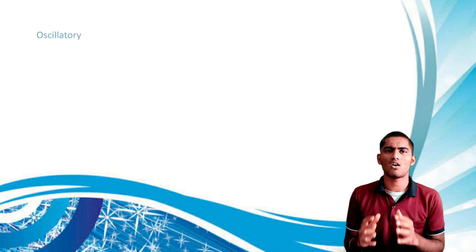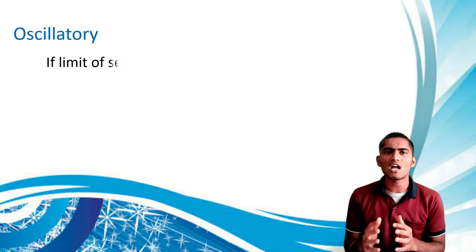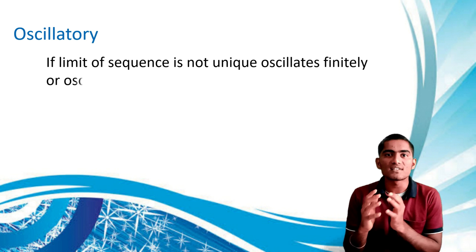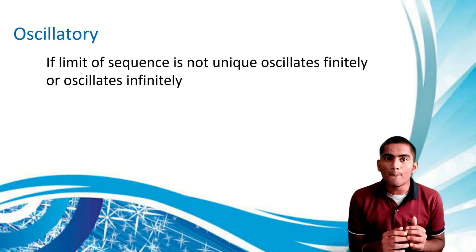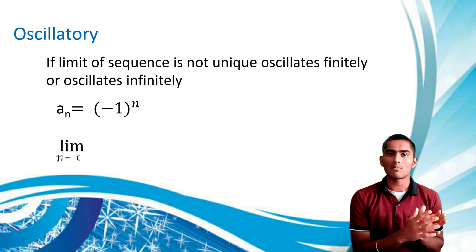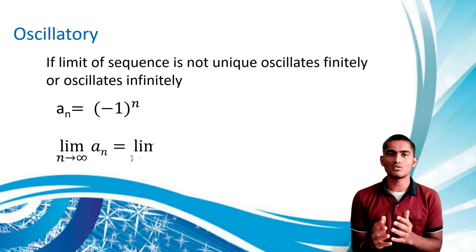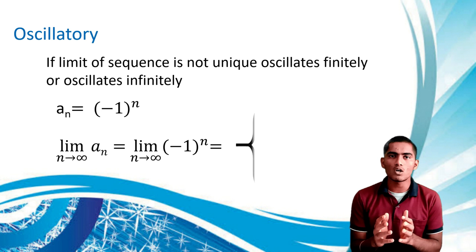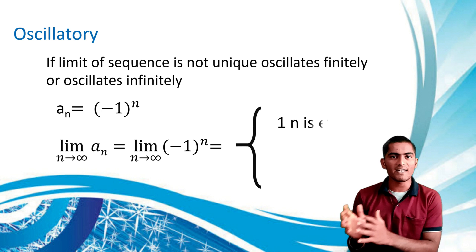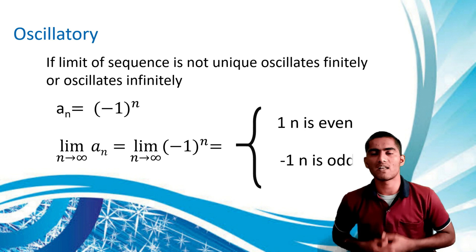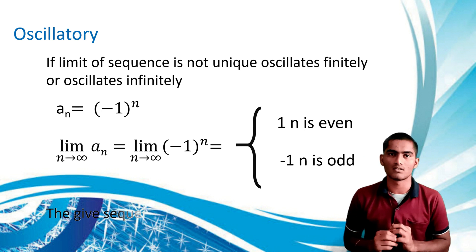Next is oscillatory. If the limit of a sequence is not unique — it oscillates finitely or infinitely — it is oscillatory. For example, the nth term is (-1)^n. Applying the limit: it equals 1 if n is even, and -1 if n is odd. Since the limit is not unique, the sequence is oscillatory.